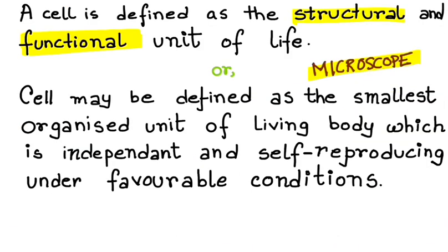Now coming to a second definition of cell. It says that cell may be defined as the smallest organized unit of living body which is independent and self-reproducing under favorable condition.